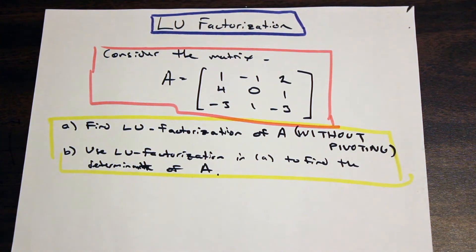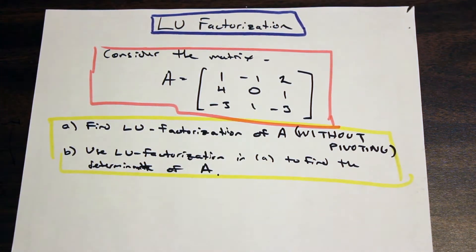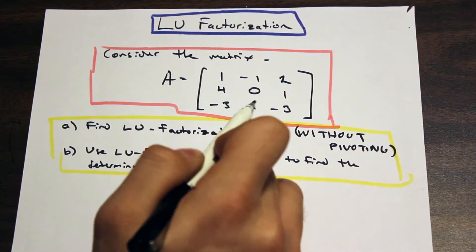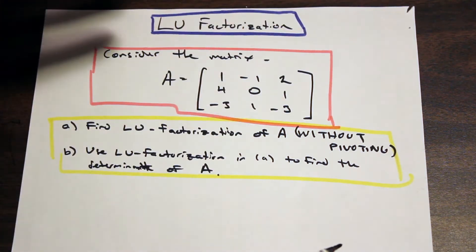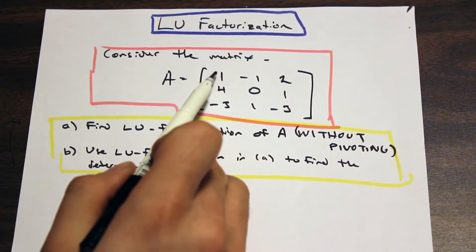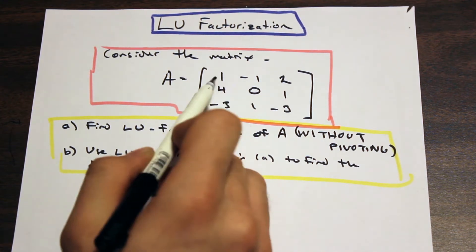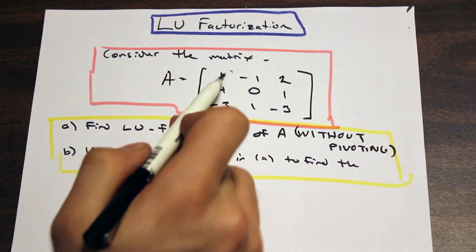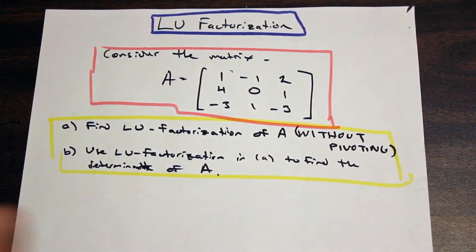The first step of LU factorization involves row reducing — we want to make the bottom lower triangular left portion of the matrix all zeros. There's an important trick: this question says not to use pivoting, which means we are not allowed to flip or reorder the rows. Luckily, our first entry is one, so we can easily subtract multiples of row 1 without needing to divide first.